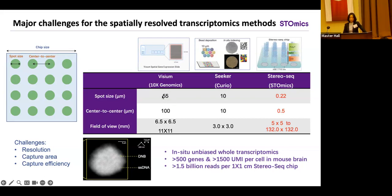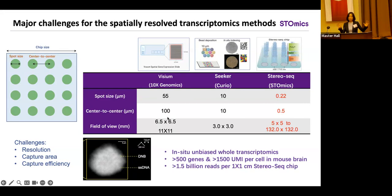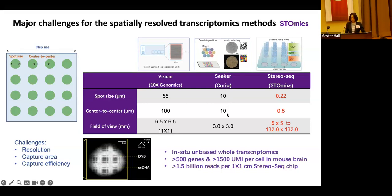The current Visium technology has a spot size — the location with unique XY coordinates — of 55 microns. If you think about it in a cell context, a cell is about 10 microns in diameter. So 55 microns is really not single-cell resolution; you can pack as many as 20 cells in that. Also, the center-to-center distance is 100 microns, meaning there's a lot of empty space on the chip, so you're missing a lot of information. Seeker from Curio has a spot size of about 10 microns, which is about single-cell size, and their beads are tightly packed with barely any empty spots. StereoSeq technology has a spot size of 0.22 microns and a center-to-center distance of 0.5 microns.